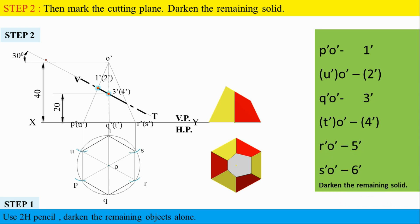Remaining solid: darken the cutting plane. The remaining solid — left side slant edge, right side slant edge — this is complete. Is the base darkened? Is the right side of the image correct? Is there a baseline? Is it a darkened plane? That is the main point.